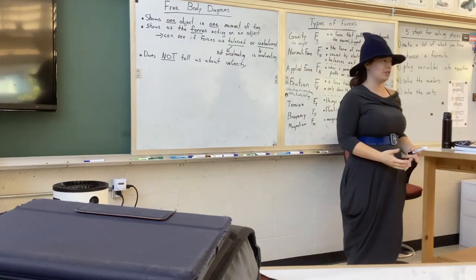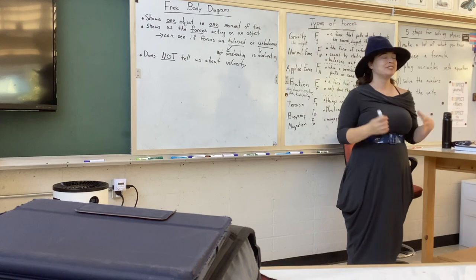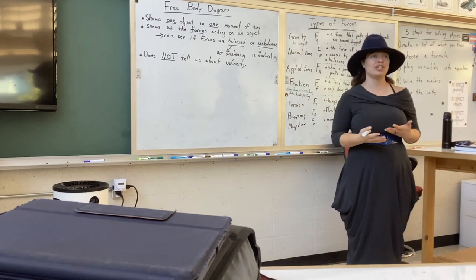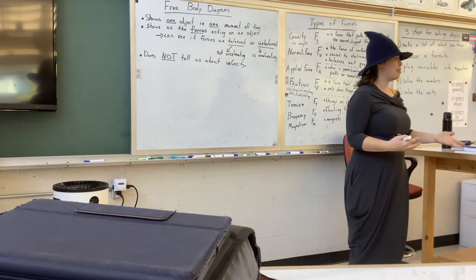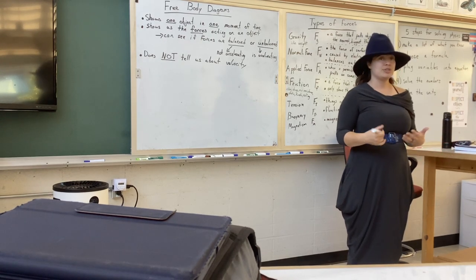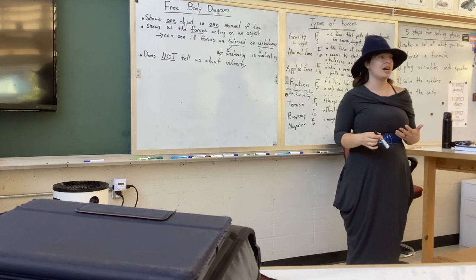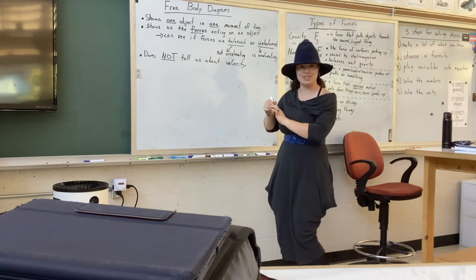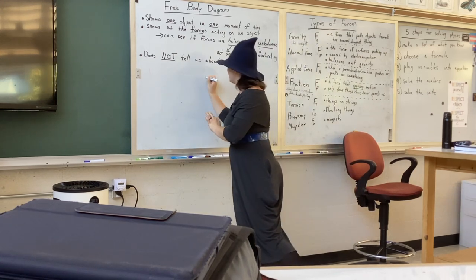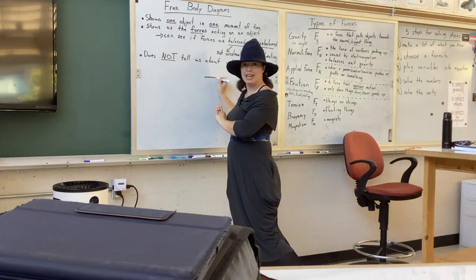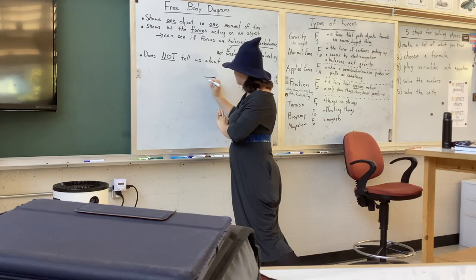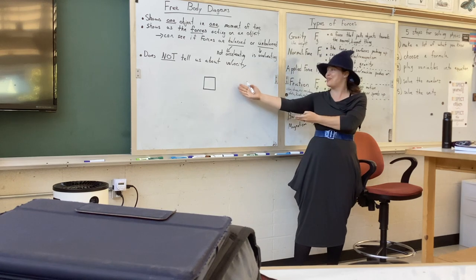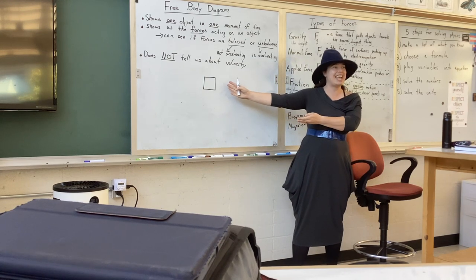Now let me actually show you what these pictures look like. In physics, we have a very particular artistic style that we use when representing objects. So let's say I want to draw a portrait of Audrey — I want to make sure I capture this adorable hat and Audrey's cheekbones and chin. Here we go. This is my beautiful portrait of Audrey. It's a box.